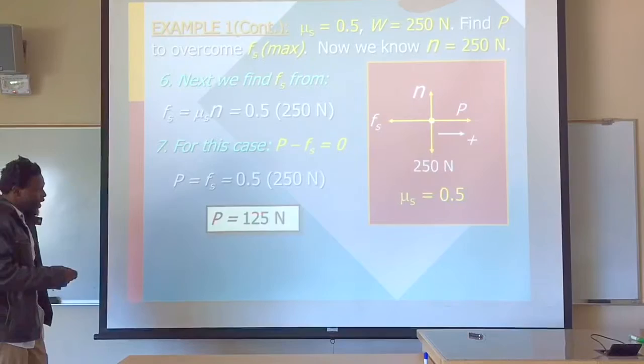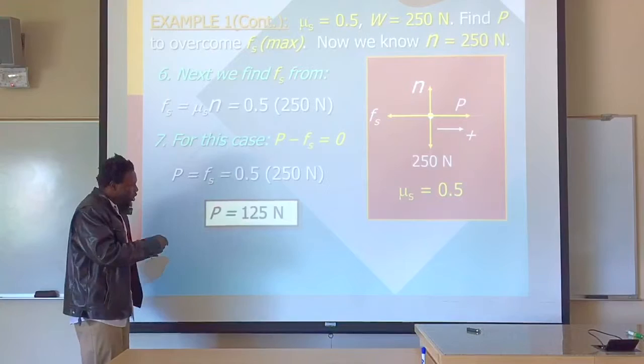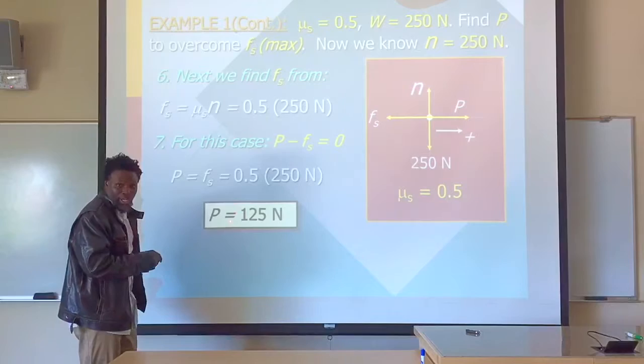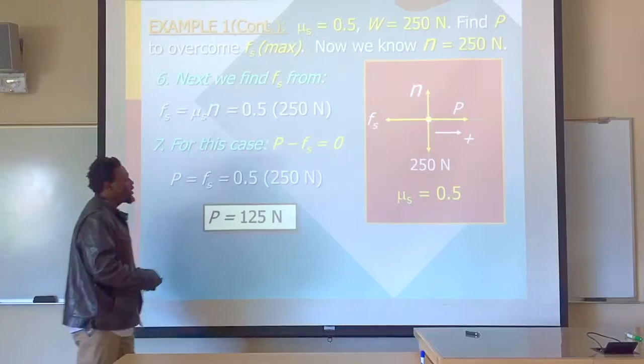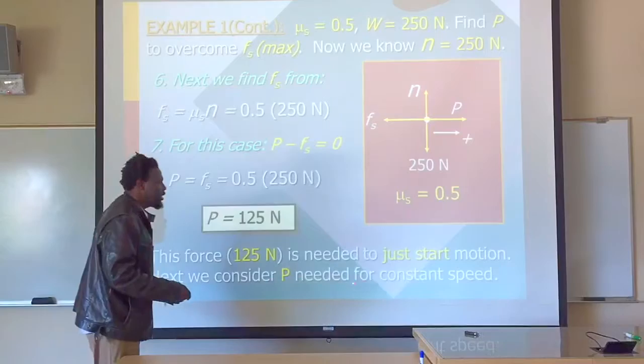What this tells us is that since 125 Newtons is the maximum force just before the block moves, in order to get it going we must have a pulling force of at least 125 Newtons to violate that inequality. In order to have motion, we need to violate the inequality, and this force of 125 Newtons is needed to just start the motion. Next, we can consider the force P needed for constant motion — that's when kinetic friction is involved.